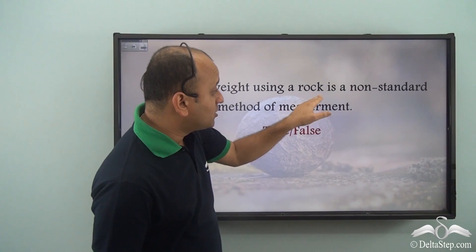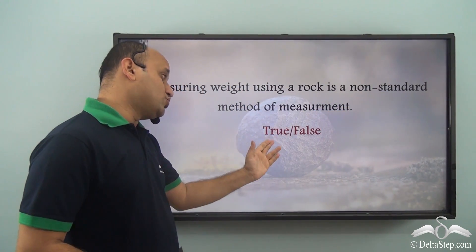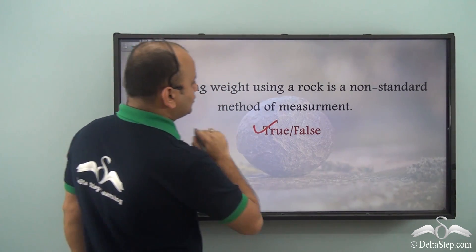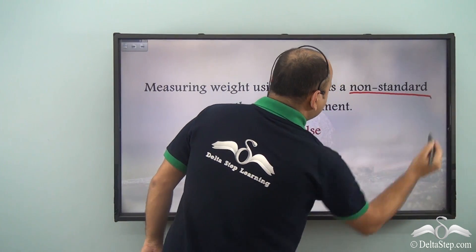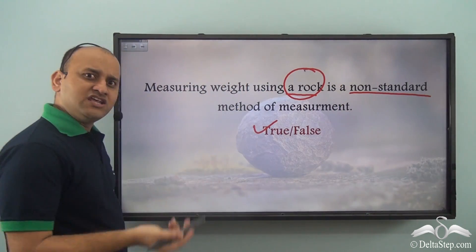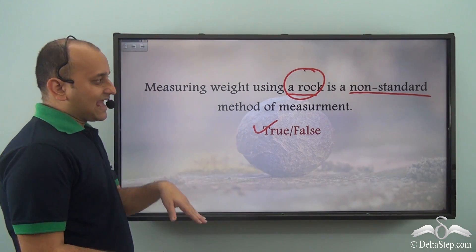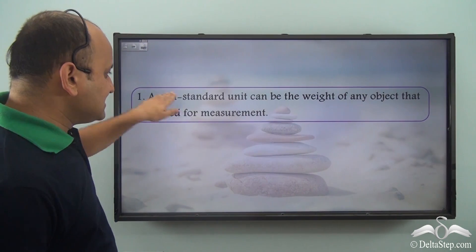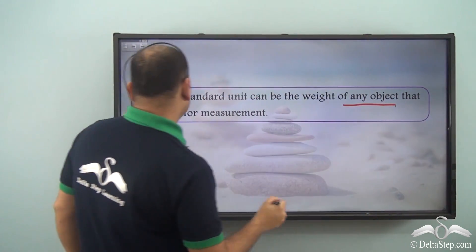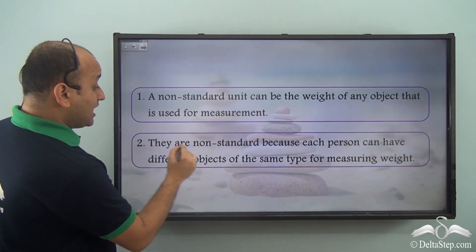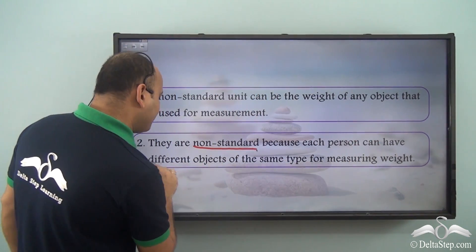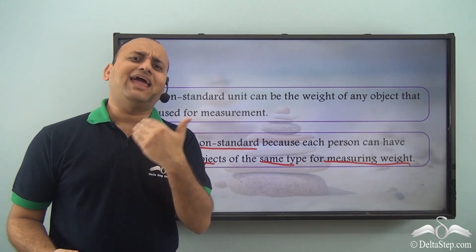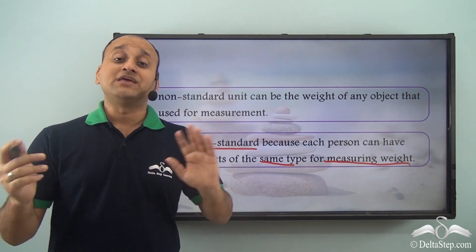Can you tell me: measuring weight using a rock is a non-standard method of measurement — is it true or false? Well, it is definitely true. When you measure the weight of something using a rock, it is a non-standard method because a rock can have any shape or size, and different people can have different types of rocks. So a non-standard unit can be the weight of any object used for measurement. They are non-standard because each person can have different objects of the same type, and objects such as batteries and rocks that vary from person to person are non-standard weights.